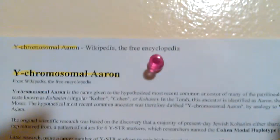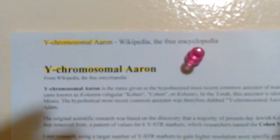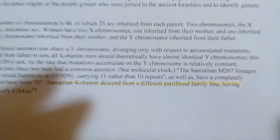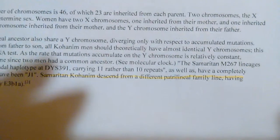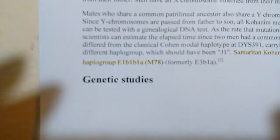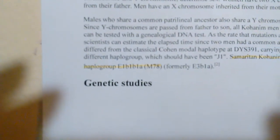Staying with this Y chromosome Aaron, according to their research the haplogroup for the Samaritan Kohenium gene — the high priesthood — it's M78.